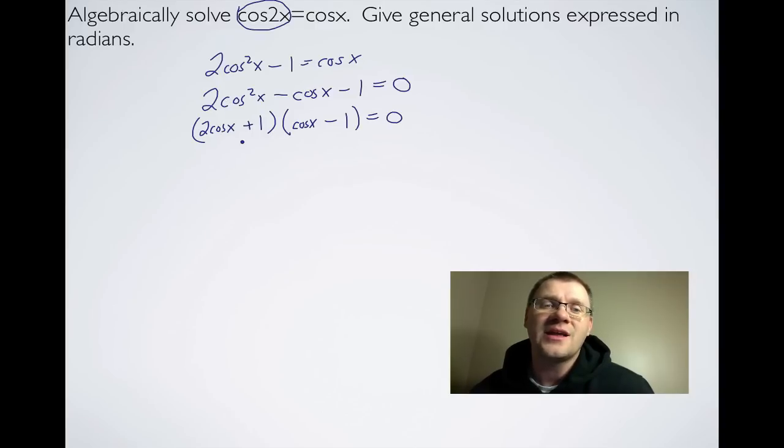And we can just double check: 2cosx times cosx is 2cos²x. 2cosx times -1 is -2cosx and a positive 1cosx when I multiply these two numbers together. That gives me the -cosx and 1 times -1 is -1.